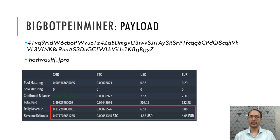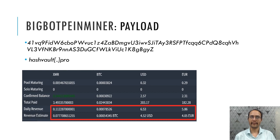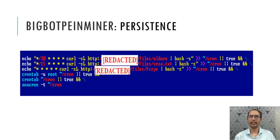BigBotPen Miner downloads a set of files and executes them to initiate mining on the victim container. It downloads the XMRig miner and a configuration JSON file which has information of the mining domain — hashvault.pro — and the wallet address. Stats show that this threat generated revenue of seven US dollars per day, and was actively generating revenue from December 1, 2019 to end of January 2020.